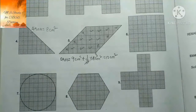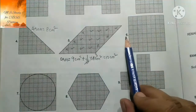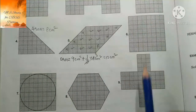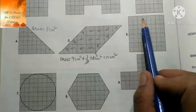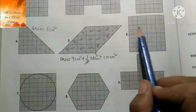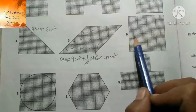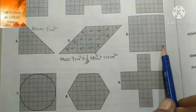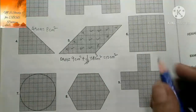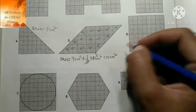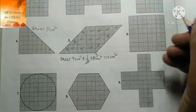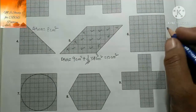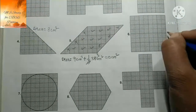इसका count कर लेते हैं। इसमें सारे के सारे full squares दे रखे हैं - 1 से 16 तक count करने पर। इसका जो area आजाएगा वो आजाएगा 16 cm²।